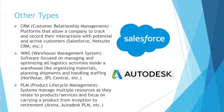WMS — Warehouse Management System — is software focused on managing and optimizing all logistics activities inside a warehouse. Things like organizing materials, planning shipments, and handling staffing — things critical to moving goods. Northstar and 3PL Central are some big names you'll hear with WMS software. And just like with CRMs, many of the big ERP providers have a module dedicated to warehouse management.